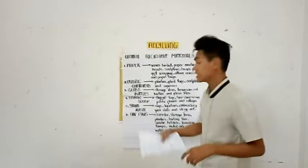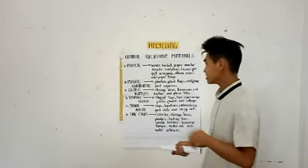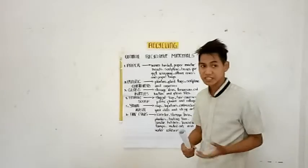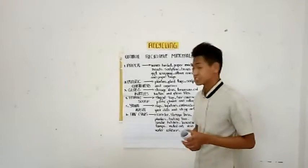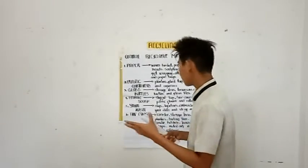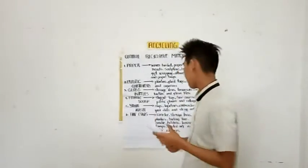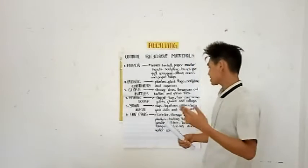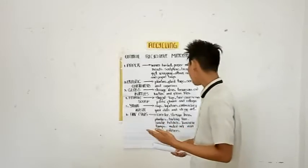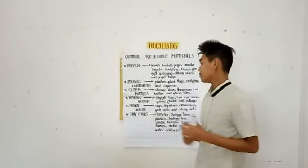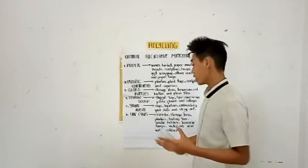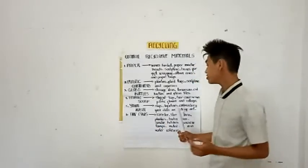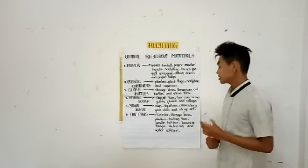Third, glass bottles — these could be used as storage items, terrariums, scat bottles, and glass tiles. Fourth, fabric scrap — it could be used as stuffed toys, hair accessories, fabric covers, and collage. Fifth, yarn waste — it could be used as rugs, tapes, trees, embroidery, yarn dolls, and string art.